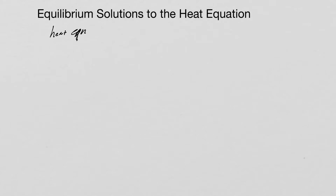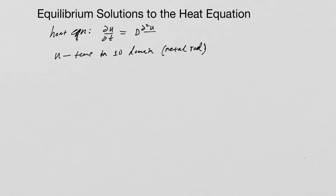Let's recall the heat equation. The heat equation is the partial derivative of u with respect to time, where u is temperature in a 1D domain — like a metal rod. That equals d times the second partial derivative with respect to space, plus 1 over c times rho times r, where d is the conductivity parameter divided by c times rho, the specific heat and mass density of the material.